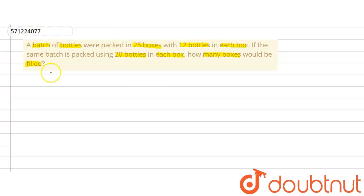So writing down what has been given in the question, we are given the number of boxes, let's denote it by x and number of bottles in each box. Number of bottles in each box is y.